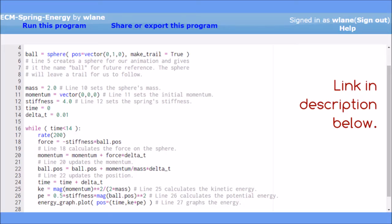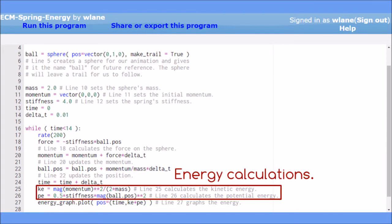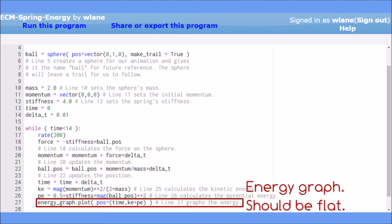In lines 25 and 26, we've added calculations of the kinetic energy KE and the potential energy PE. In line 27, instead of graphing the ball's position, we're now graphing the total energy.